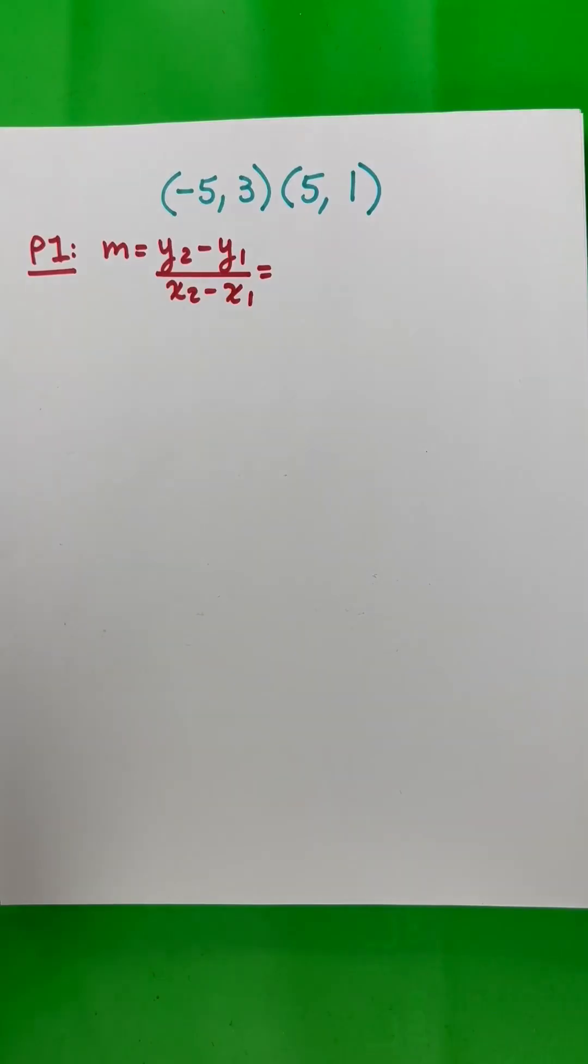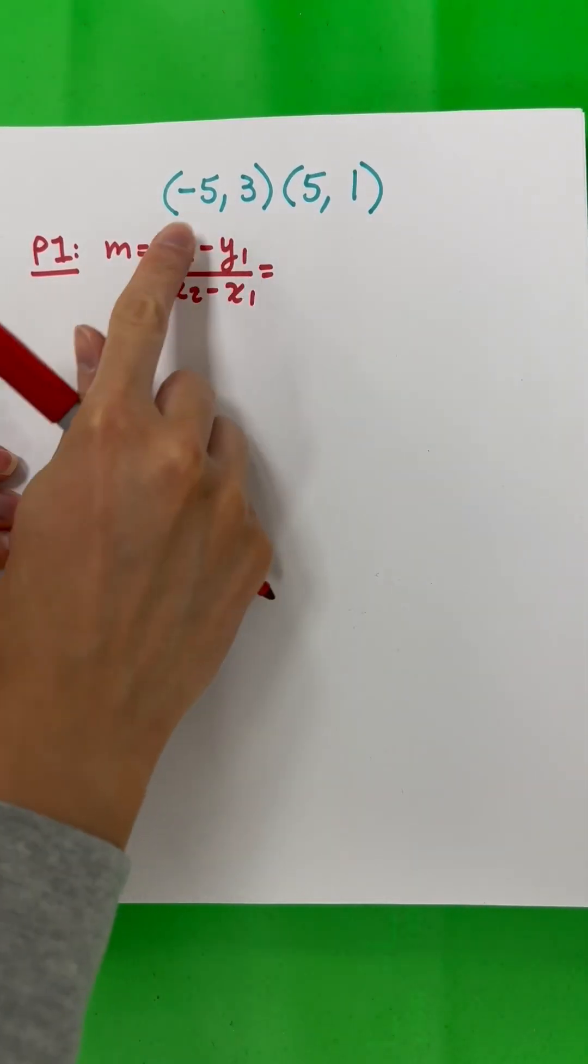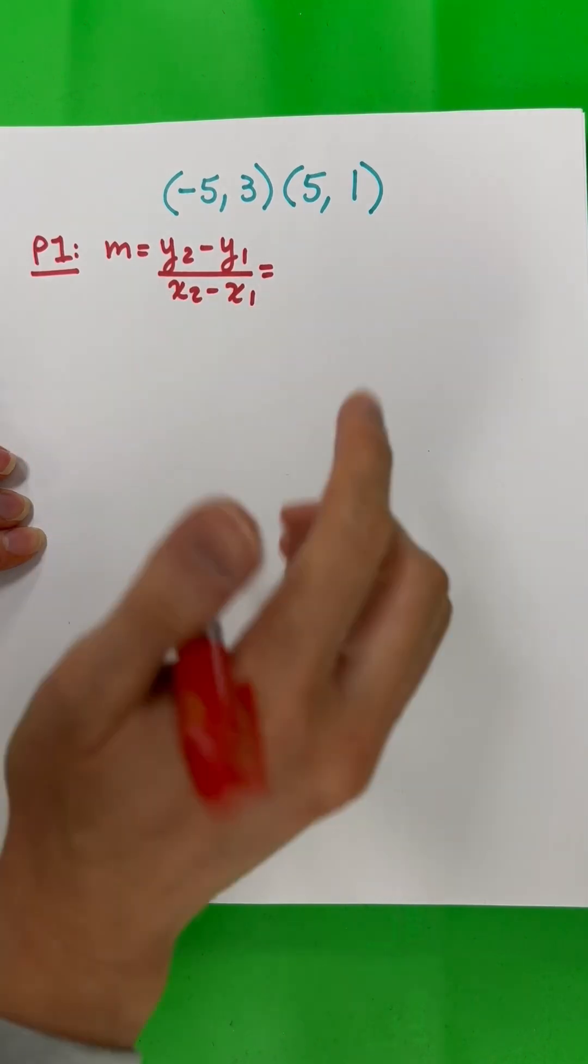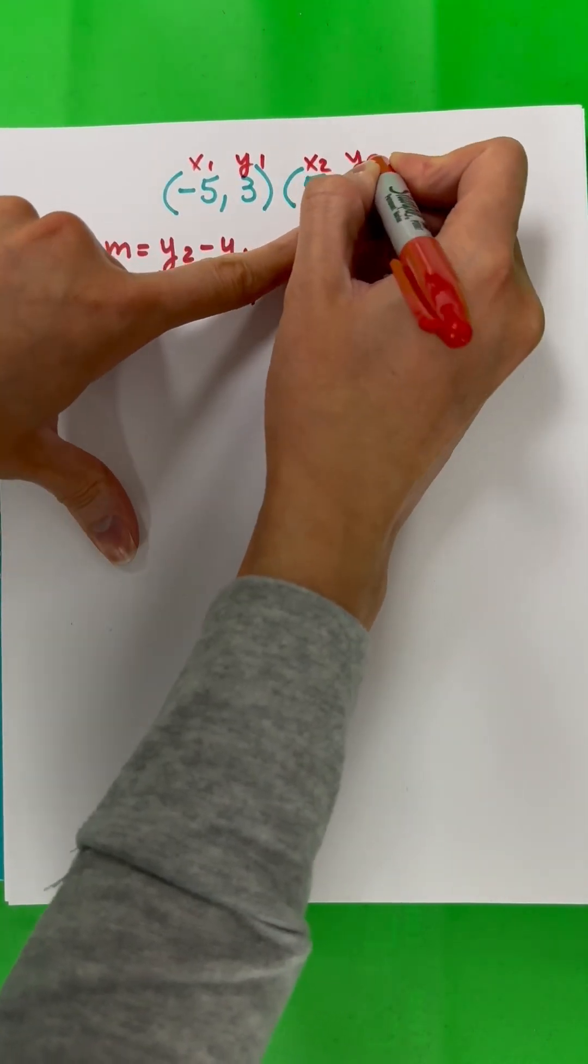Write in slope-intercept form. For the first part, you need to find the slope, which is M, and here's your formula: Y2 minus Y1 divided by X2 minus X1. This is X1, Y1, X2, Y2.